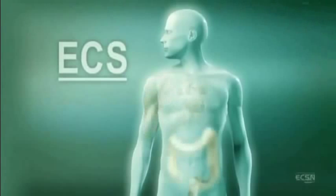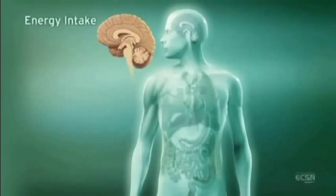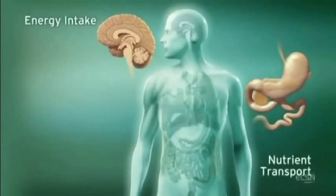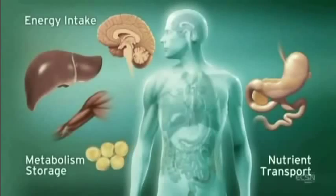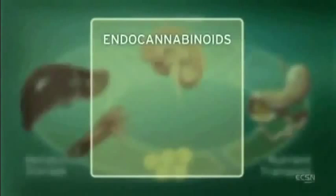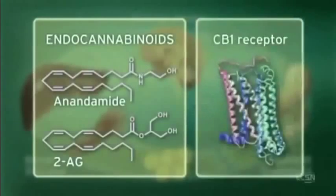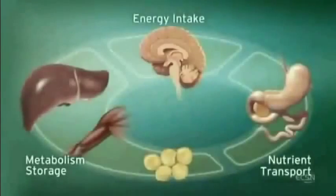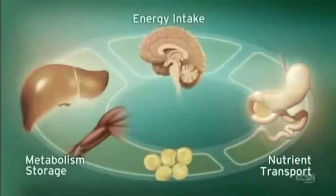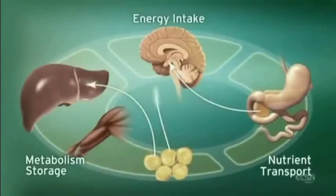The endocannabinoid system, or ECS, influences multiple physiologic processes. This intricate system modulates energy intake as well as nutrient transport, metabolism, and storage. The ECS regulates these processes through endogenous ligands such as anandamide and 2-arachidonylglycerol, and the CB1 receptor. CB1 receptors are located in the brain, digestive tract, muscle, and adipose tissue. Integration of these central and peripheral ECS components is achieved through neuronal and hormonal signaling.